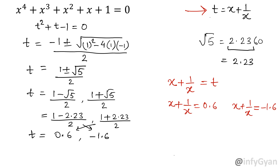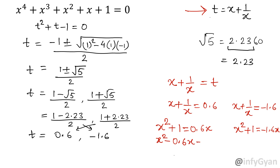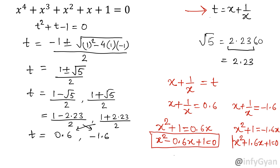Let us solve. From the first case, multiplying through gives x squared minus 0.6x plus 1 equal to 0. From the second case, x squared plus 1.6x plus 1 equal to 0. So there are two quadratic equations in variable x. From here we will get 4 solutions total, because this is a quartic equation of degree 4 — 2 solutions from each quadratic.